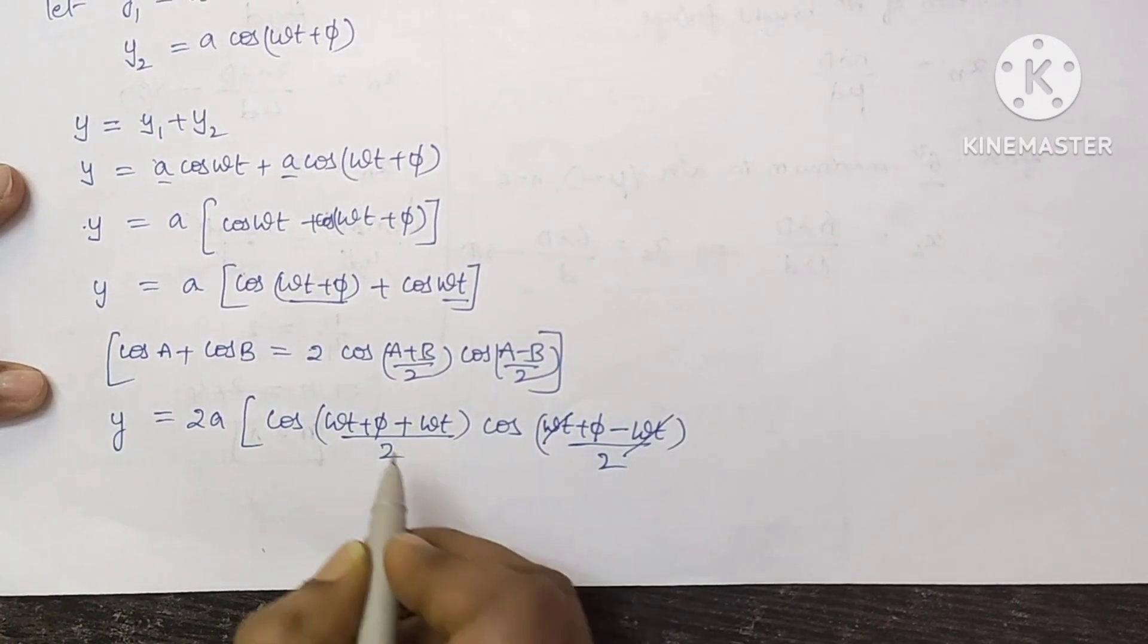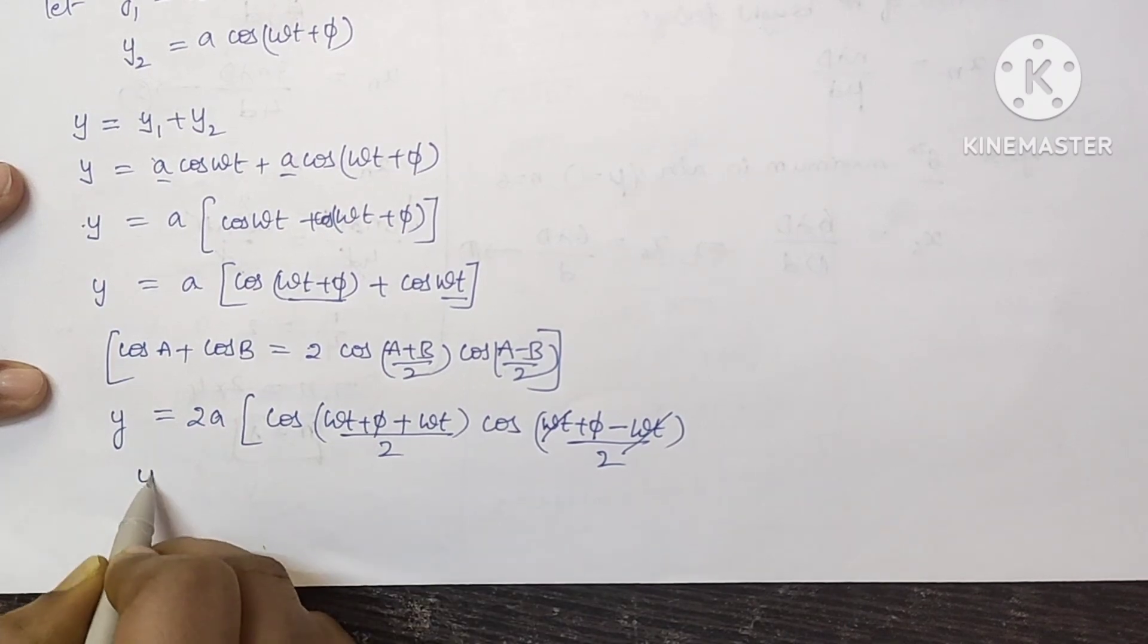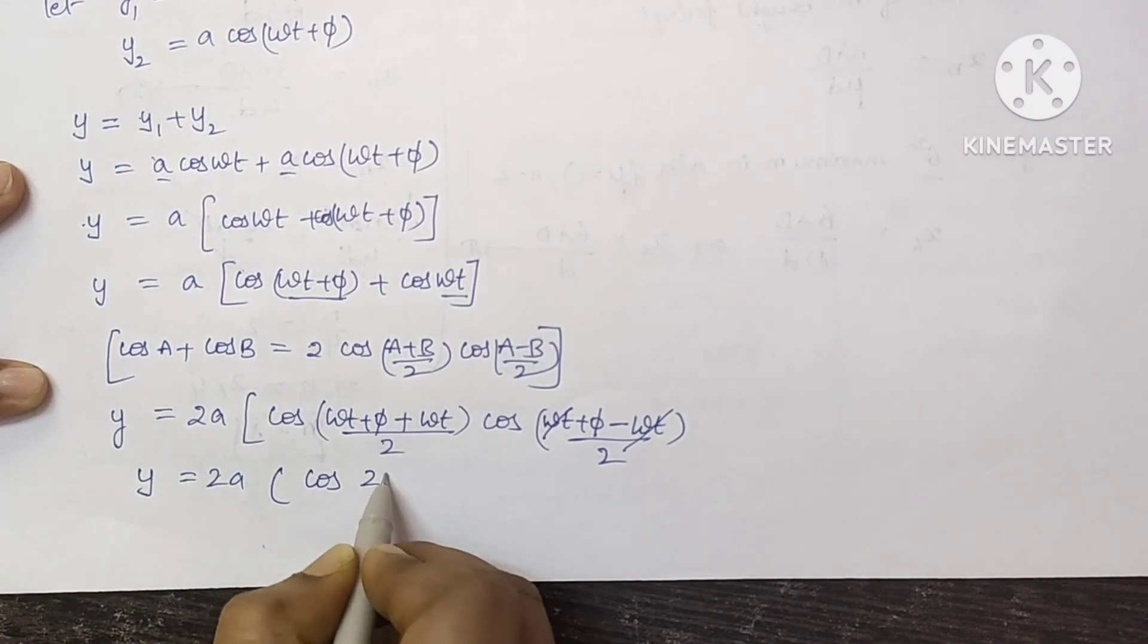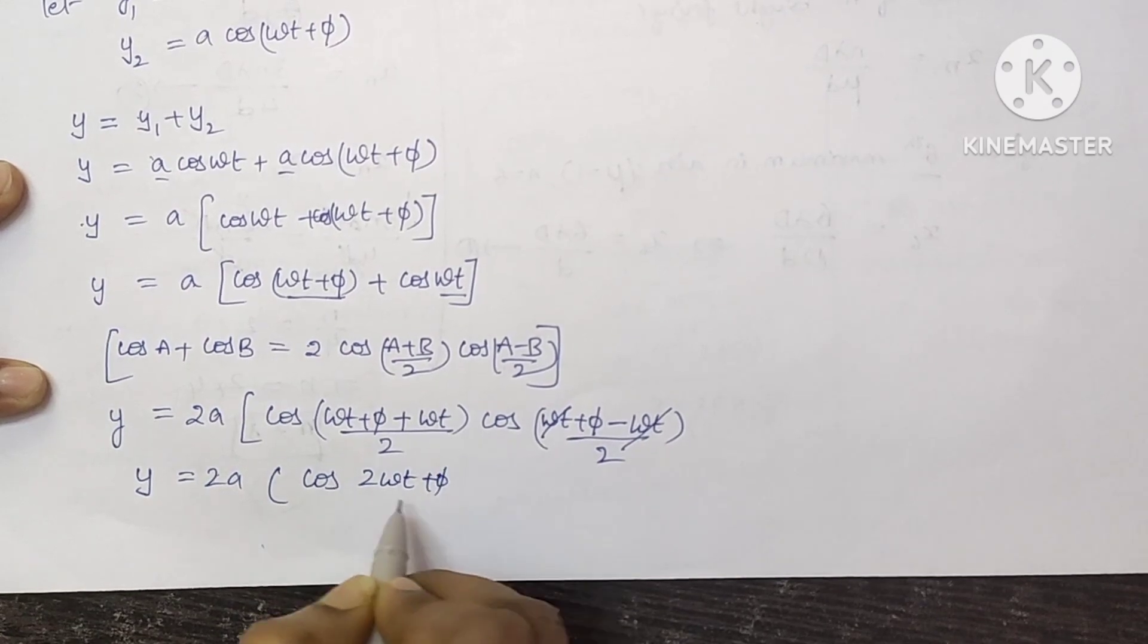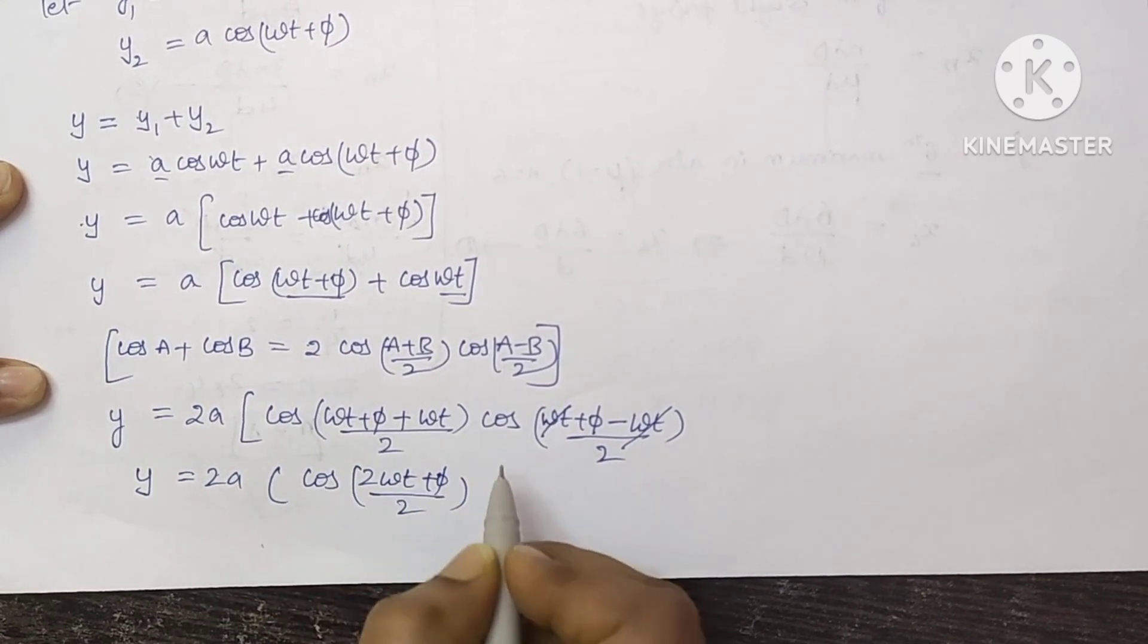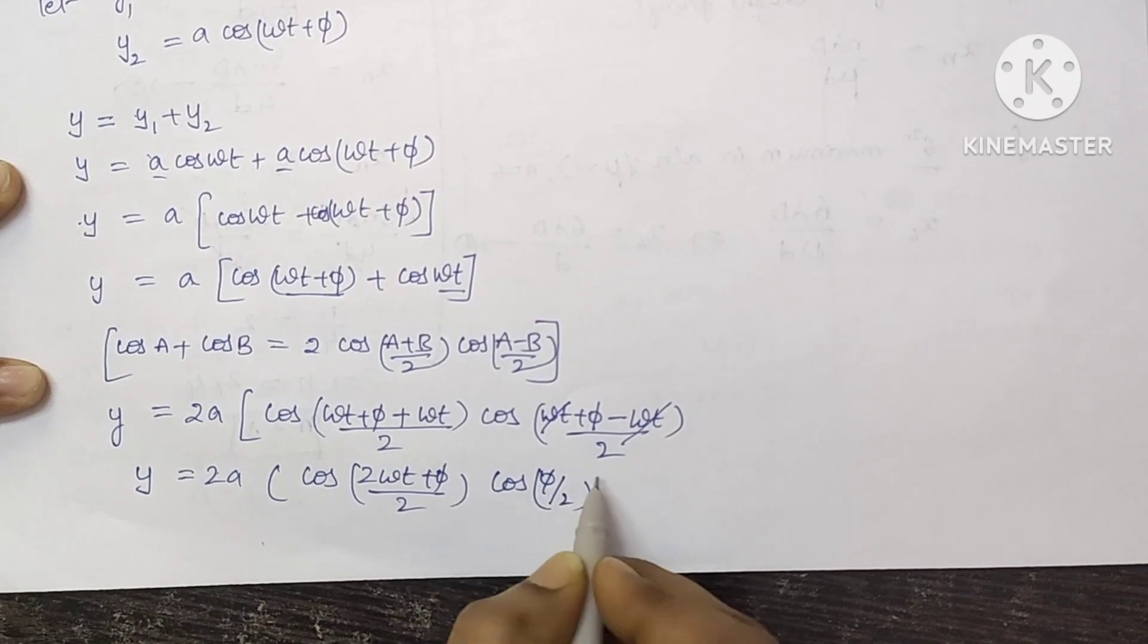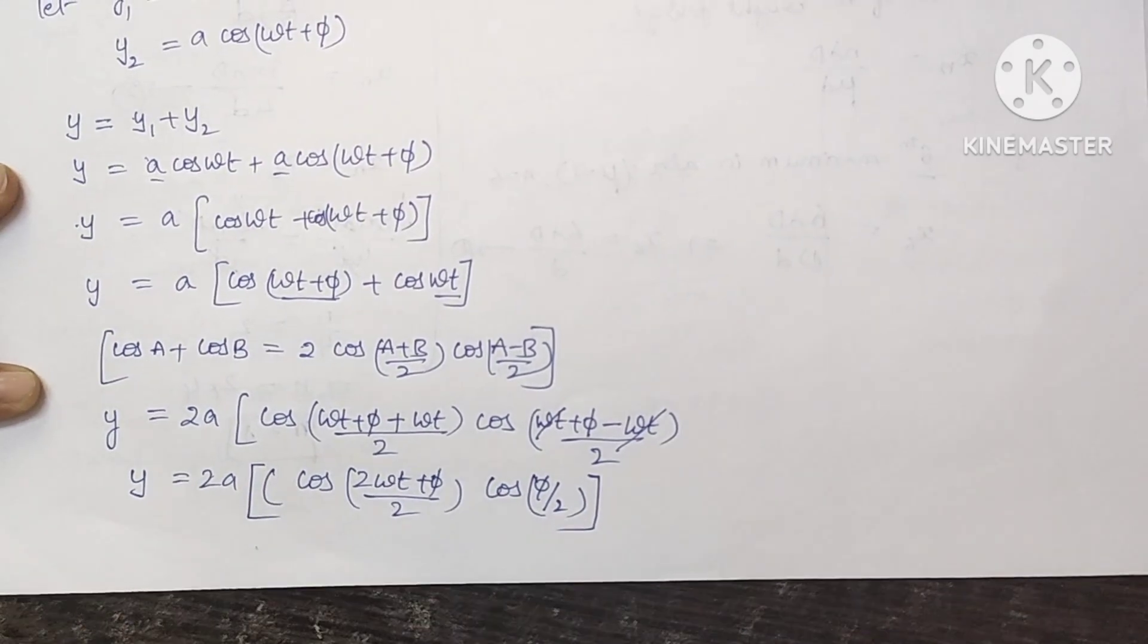So this omega t, omega t will get cancelled. This omega t, omega t will become 2 omega t. 2 omega t plus phi by 2, and cos, this is phi by 2.